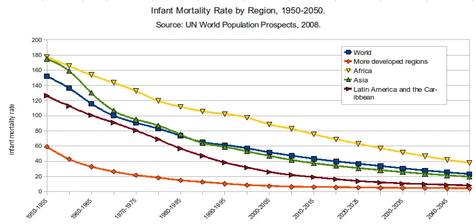In the United States, a primary determinant of infant mortality risk is infant birth weight, with lower birth weights increasing the risk of infant mortality. The determinants of low birth weight include socioeconomic, psychological, behavioral, and environmental factors.